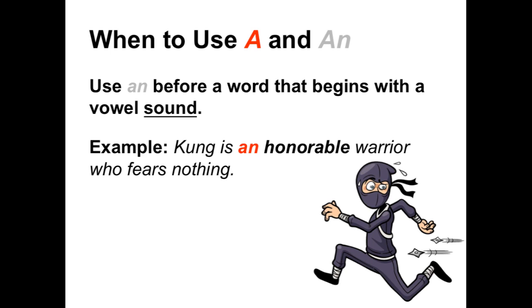That is because 'honorable' begins with a vowel sound. Notice that it starts with the letter H. H is a consonant, but in the word 'honorable,' the H is not pronounced — the H is silent. Therefore, 'honorable' begins with the vowel sound O: honorable. So using the indefinite article 'an' here is correct.